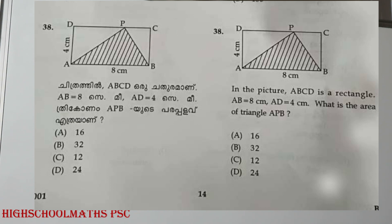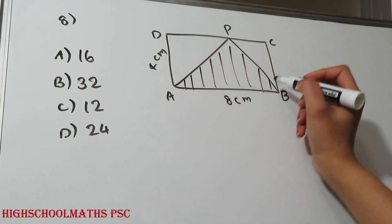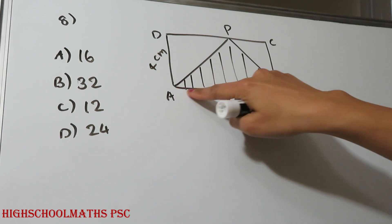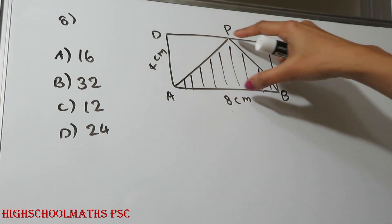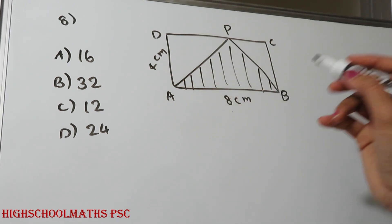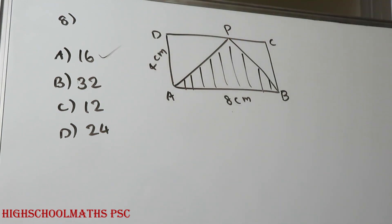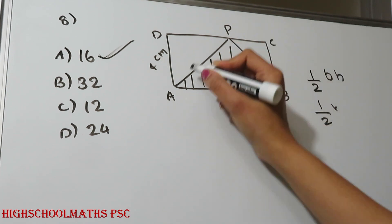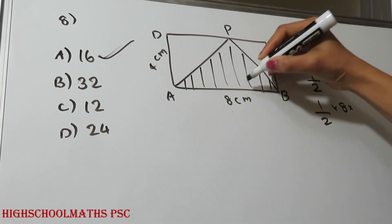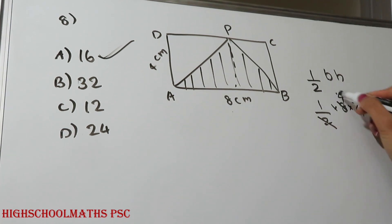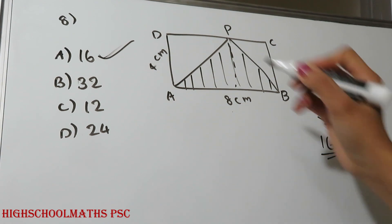This picture is a rectangle where AB is equal to 8 cm and AD is equal to 4 cm. What is the area of triangle APB? The base AB is equal to 8 cm. The height is equal to 4 cm. Area equals half times base times height, so 4 times 2 gives 8, and 4 times 4 is 16. The area is 16 cm². Option A is the correct answer.